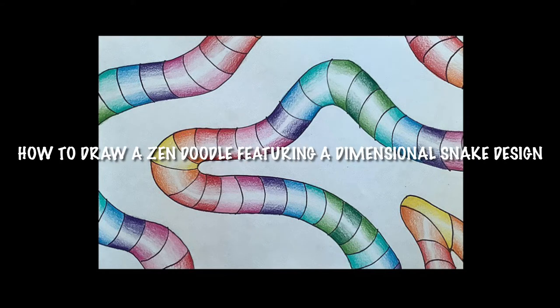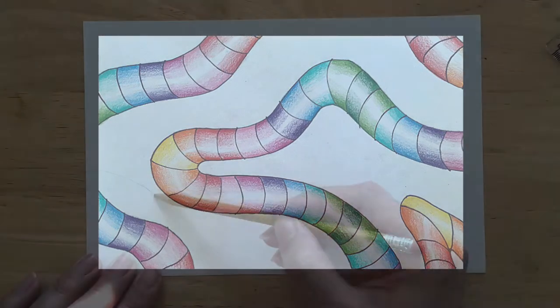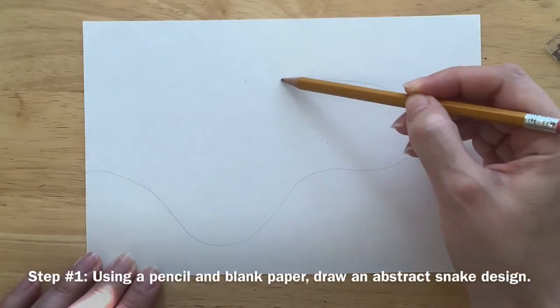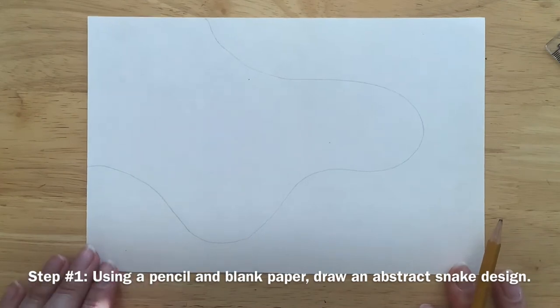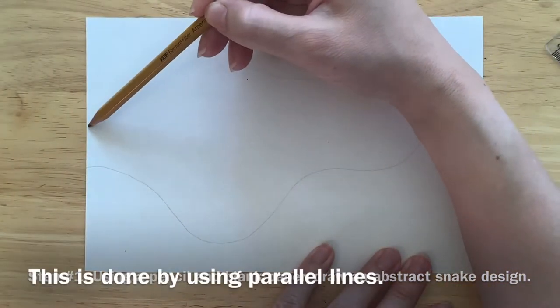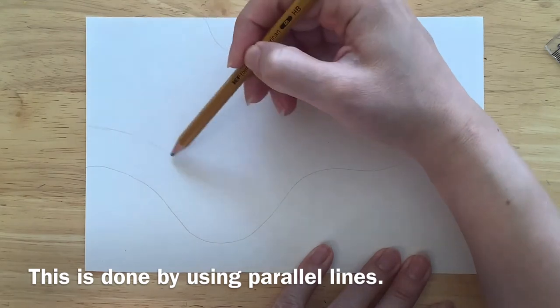Today you will be creating a zendoodle featuring a dimensional snake design. Using a pencil and blank paper, draw an abstract snake design. This is done by using parallel lines.